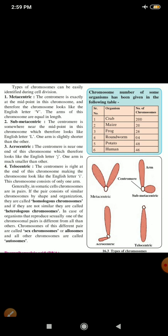Generally, in somatic cells, chromosomes are in pairs. If the pair consists of similar chromosomes by shape and organization, they are called as homologous chromosomes. If they are not similar, they are called as heterologous chromosomes. Hetero means different. Homo means same. In case of organisms that reproduce sexually, one of the chromosome pairs is different from all others. Chromosomes of this different pair are called as sex chromosomes or allosomes. And all other chromosomes are called as autosomes.